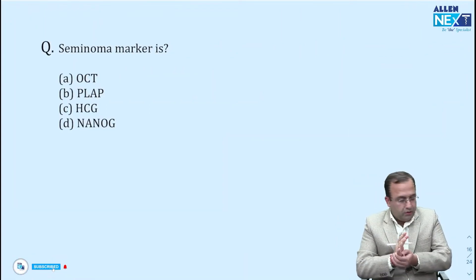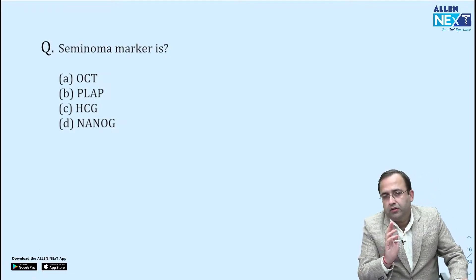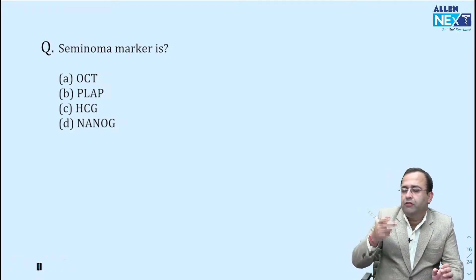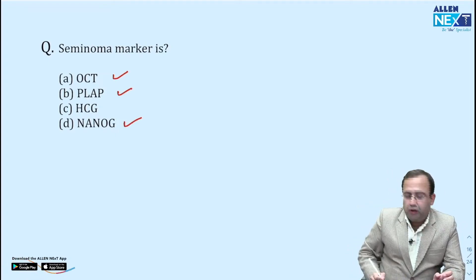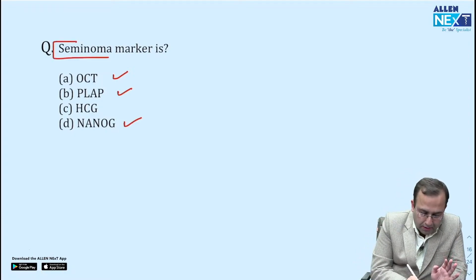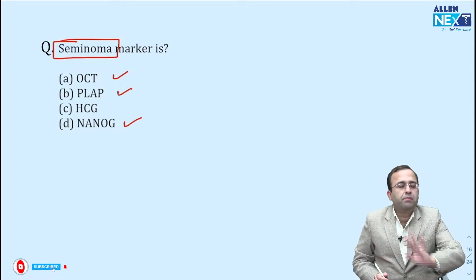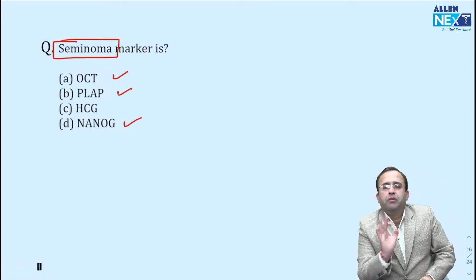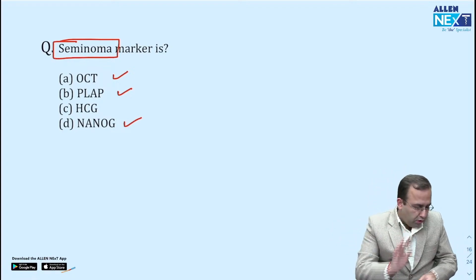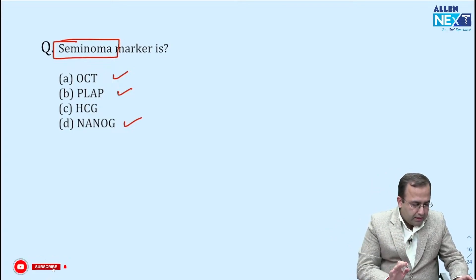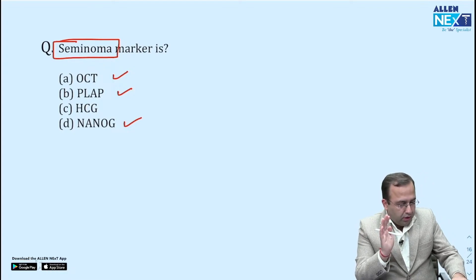Seminoma markers — there was confusion with respect to options, whether it was multiple options 1, 2, 3, 4 etc. OCT, PLAP, and NANOG are the seminoma markers. If I have to choose one, the best answer was PLAP. We do not consider HCG as a seminoma marker, though it can be seen in less than 15% of seminoma cases. The answer was 1, 2, and 4 — it is not HCG.